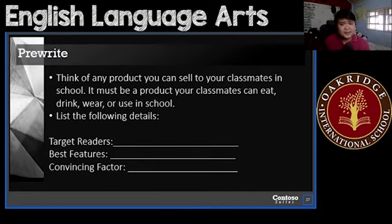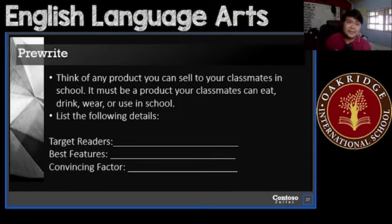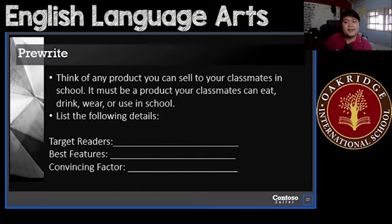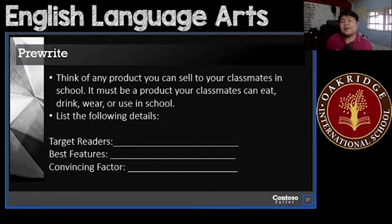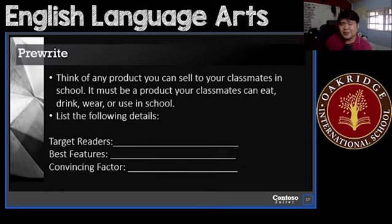Write down the following details: Who are your target readers? Will you be selling to your classmates or to classmates in another section? What are the best features of your product? What are the things that would make people find it amazing, different compared to others? And then your convincing factor — why should they buy it? Why is it so important that people should actually buy it?